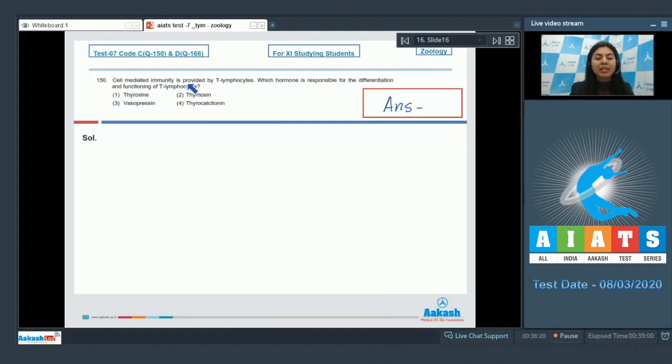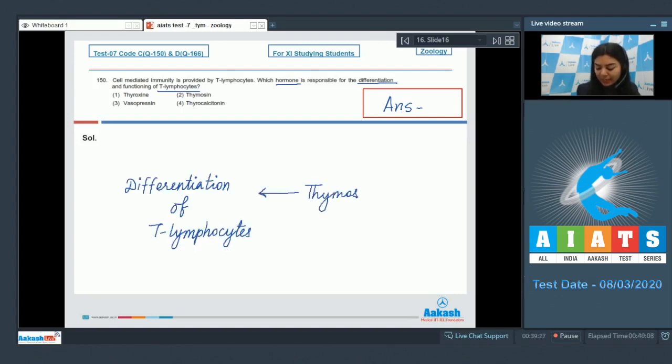Question 150: Cell mediated immunity is provided by T lymphocytes. Which hormone is responsible for differentiation and functioning of T lymphocytes? Thyroxin, thymosin, vasopressin, or thyrocalcitonin. Differentiation of T lymphocytes is brought about by thymosin hormone, released by thymus. The correct answer is option 2, thymosin. Thymosin degenerates in older individuals, lowering immunity.